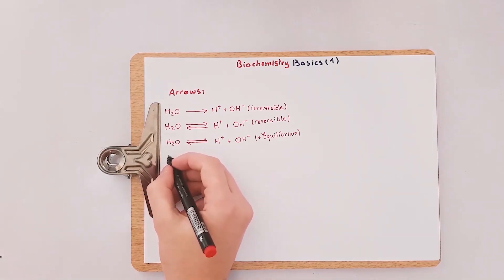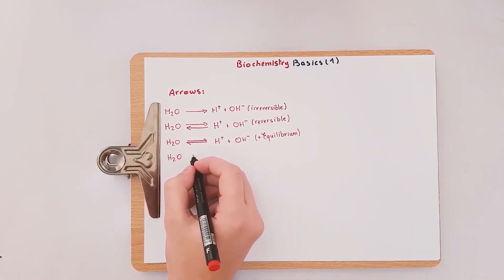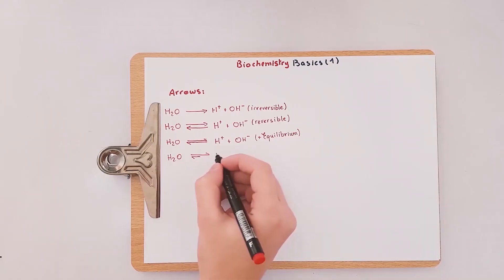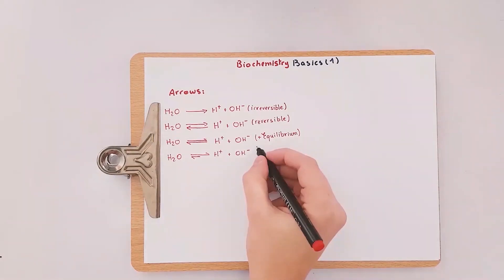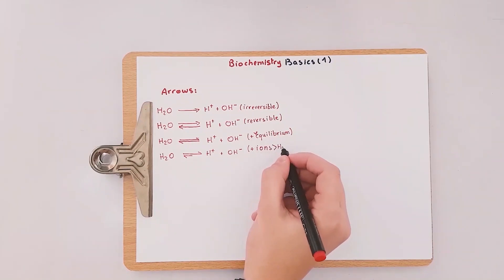The fourth arrow is just like the third one except that the arrow heading towards the ions is significantly longer than the opposite one, meaning that this reaction at equilibrium will tend to have more ions present than water molecules.